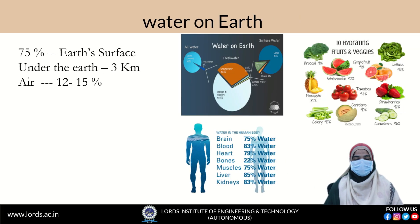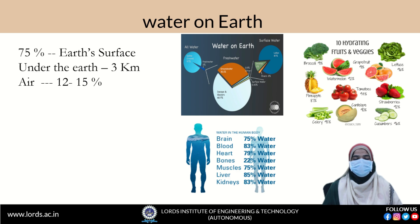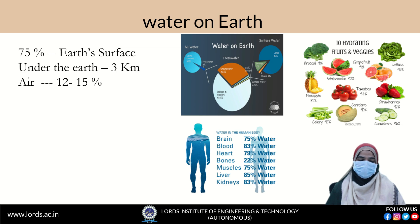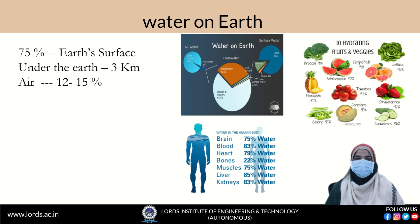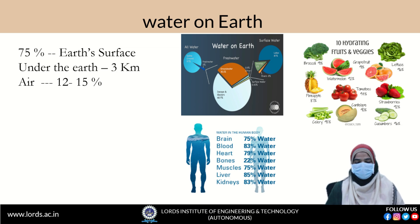Let me start with the introduction. Water is widely distributed in nature. Near about 75% of water is present in the form of matter on the earth's surface. Beside the visible water on earth's surface, near about 3 km of water is present beneath the earth. Air also contains 12–15% of water. Along with that, all living organisms, plants and animals also contain water.